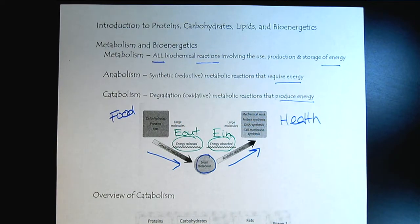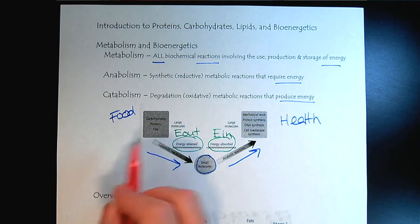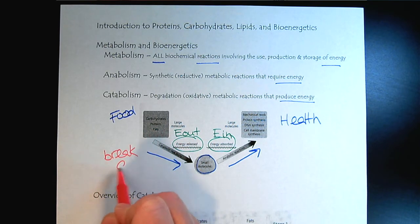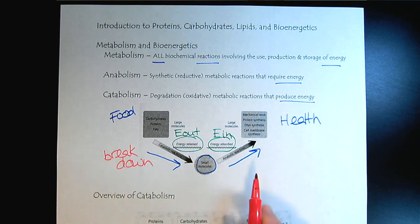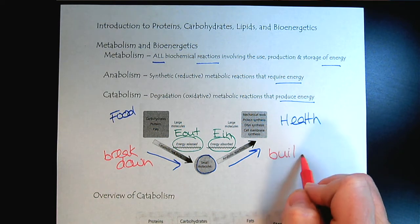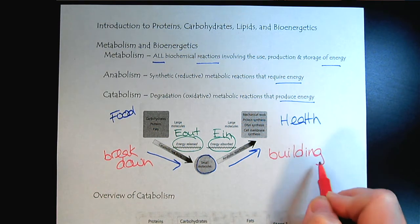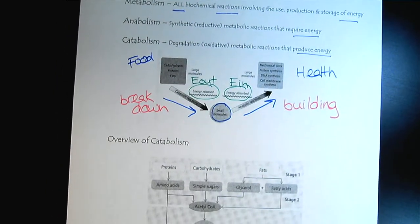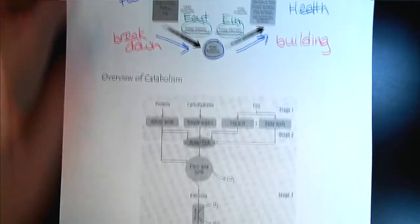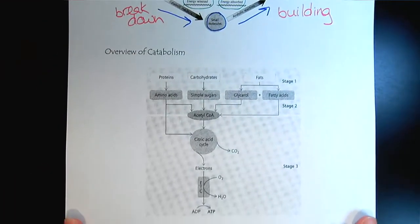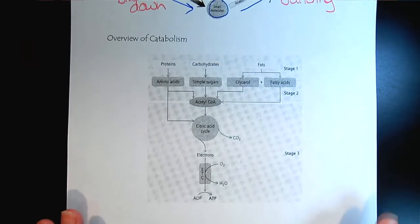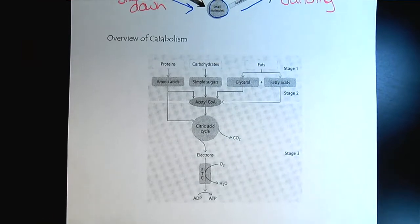When you think about catabolism, think about breakdown. When you think about anabolism, think about building. The way I keep them straight is I think about professional sports, and we hear about some athletes using anabolic steroids to build their muscle mass. And so then our goal in these next few chapters is we're going to look at catabolism mostly. How do we break down our food and get energy from it?